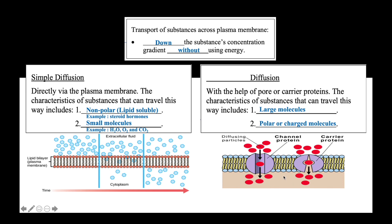There are two types of transport proteins: the channel protein and also the carrier protein. Since the movement of these substances required facilitation by transport protein, hence this method of transport is known as facilitated diffusion. Examples of substances transported across the plasma membrane via facilitated diffusion include glucose, sodium ion, and chloride ion.